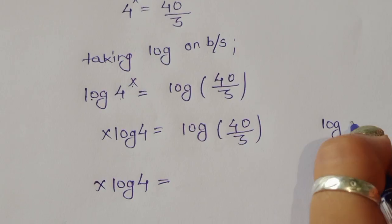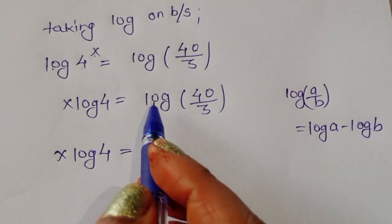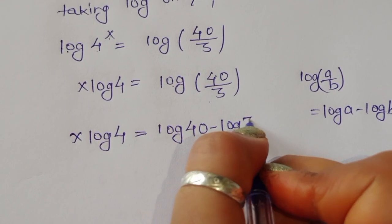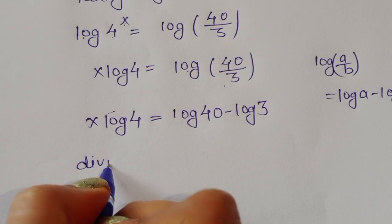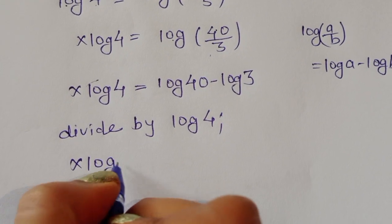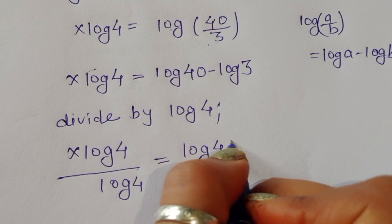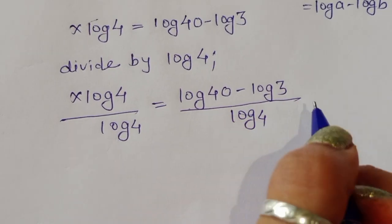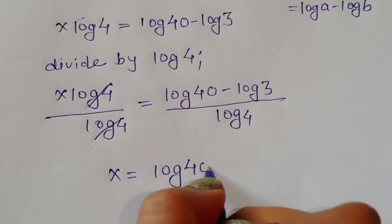Now we apply the formula log(a/b) = log(a) − log(b). So x·log(4) = log(40) − log(3). To isolate x, we divide both sides by log(4), giving x = [log(40) − log(3)] / log(4).